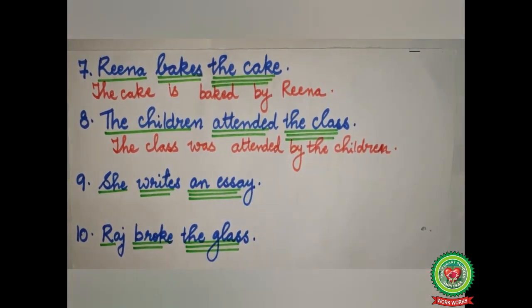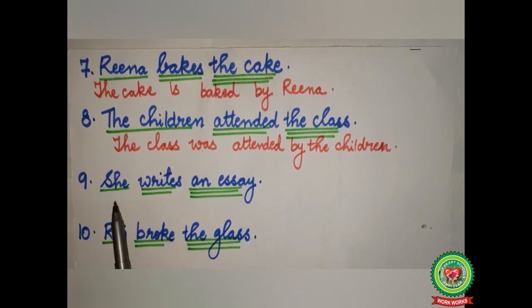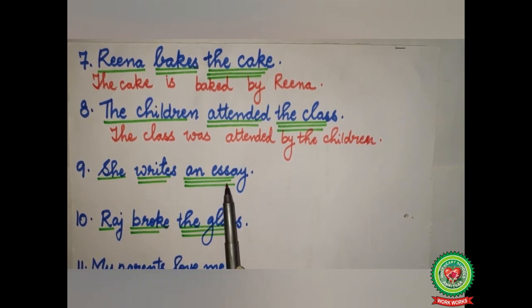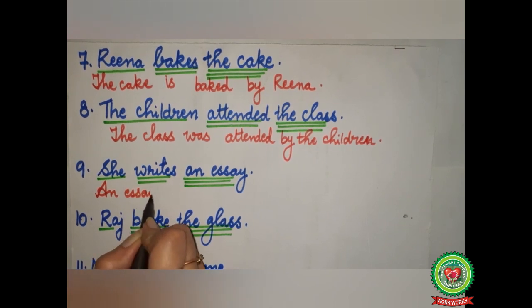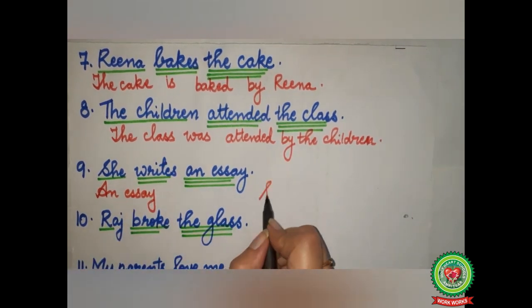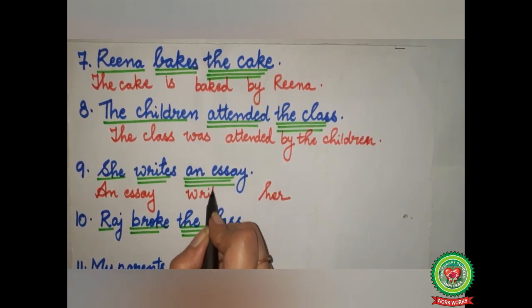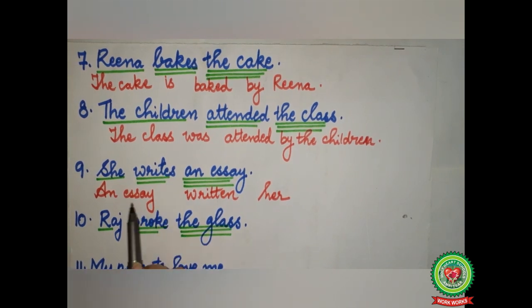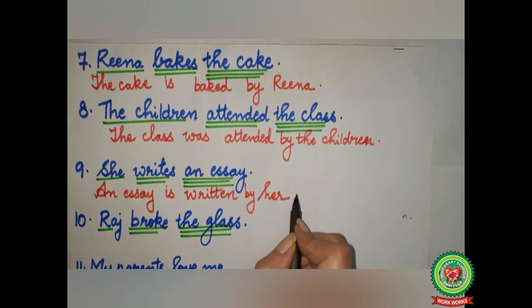Sentence nine: 'She writes an essay.' She — subject, single underline. 'Writes' — double underline. An essay — object, triple underline. An essay will come in the beginning, 'she' will go to the last and become 'her.' 'Writes' will change into its V3 form 'written.' 'Writes' is simple present tense, so we use 'is.' Answer: 'An essay is written by her.'